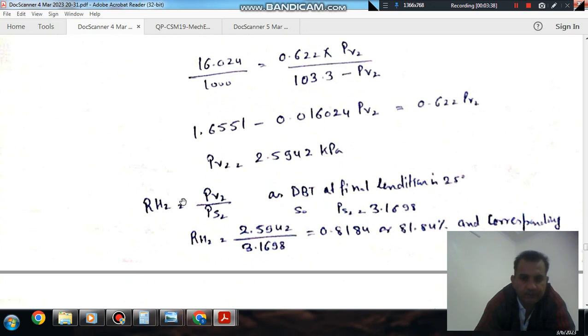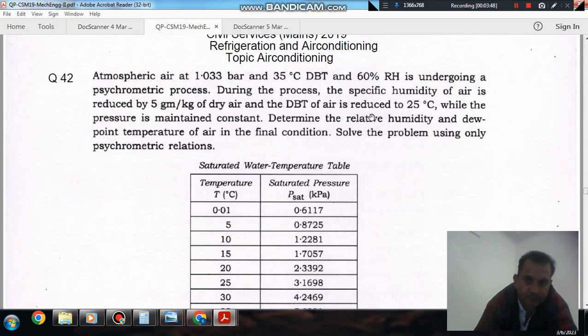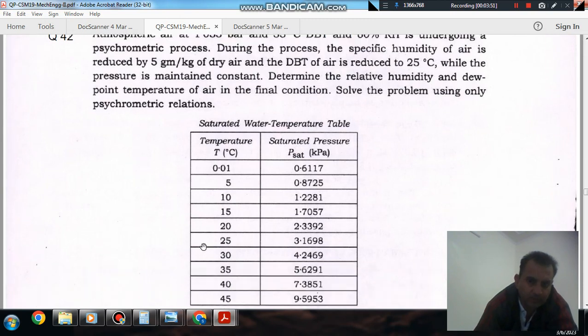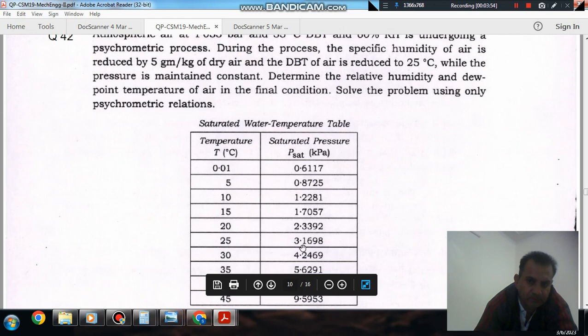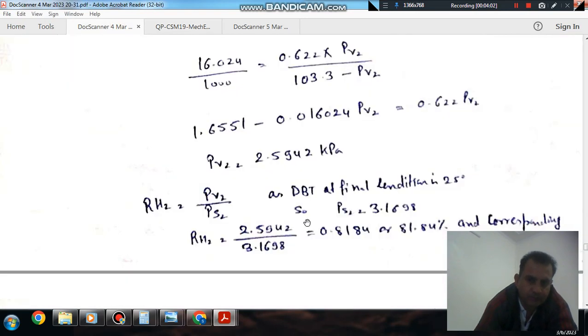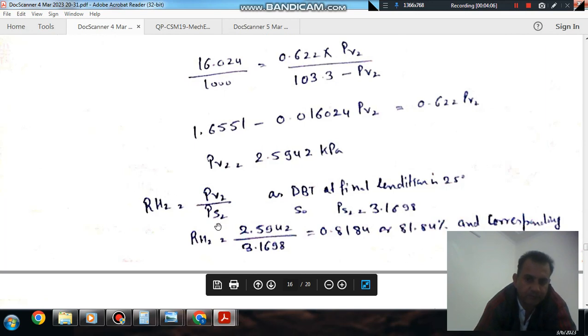And again, the relative humidity is equal to PV2 by PS2 because we have PV2. And the final temperature is given as 25 degrees Celsius. According to the table, at 25 degrees Celsius, the saturation pressure is 3.1698 kPa. So relative humidity can be found out as PV2 by PS2. Relative humidity is 0.8184 or 81.84%.